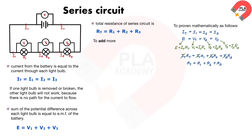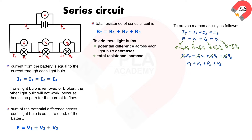So, when more light bulbs are added in series to a circuit, the potential difference across each light bulb decreases and total resistance increases. This causes the current in each light bulb to decrease, causing them to be dimmer.